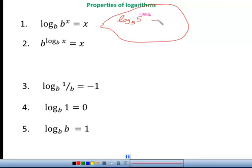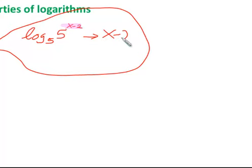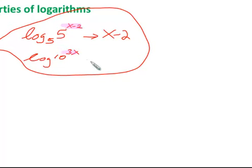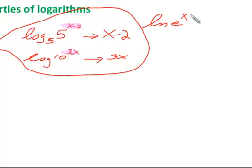So if you were to evaluate log base 5 of 5 to the x minus 2, your answer would be x minus 2. Another example: log base 10 of 10 to the 3x — because the base is 10 and both bases are the same, you get just the exponent, 3x. And if you have the natural log of e to the x plus 1, your answer is x plus 1, because ln means base e, and since those two bases are the same, you just get x plus 1.